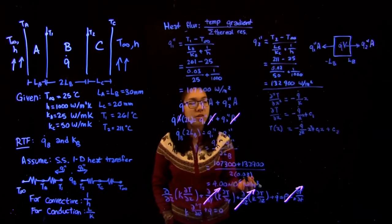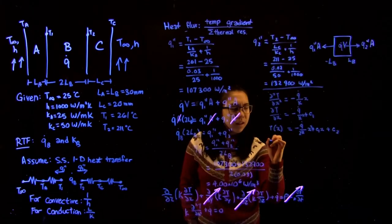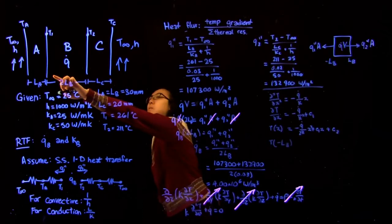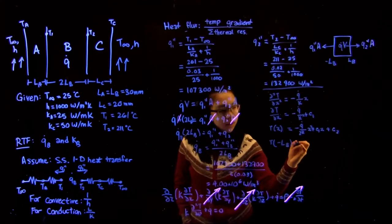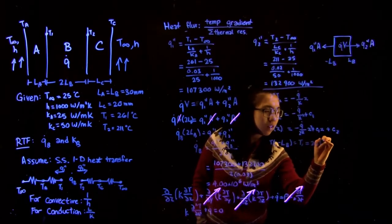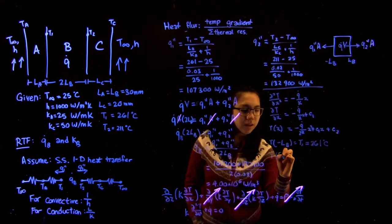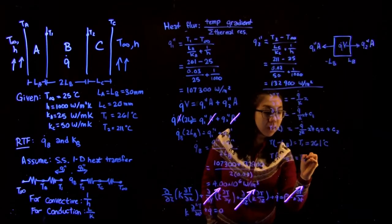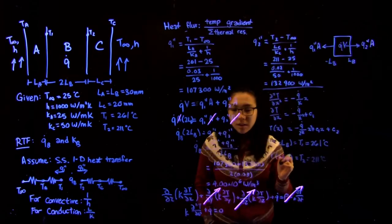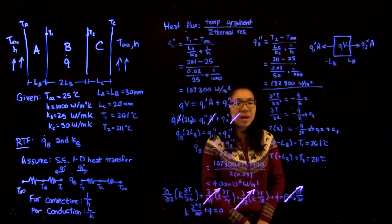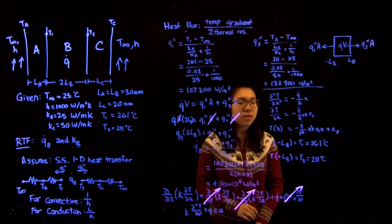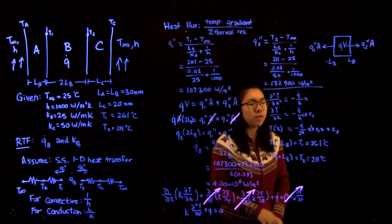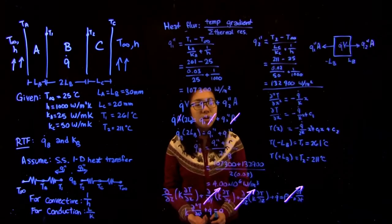Now we just want to substitute in our known boundary conditions. We know that at the left boundary this is going to be equal to t1 which is 261 degrees Celsius. We're also given that at the positive boundary the temperature of the wall is at t2 which is 211 degrees Celsius. You'll note that now we have the temperature profile which has three unknowns, but we actually only have two boundary conditions. The unknowns we have are k, c1, and c2, but we only have two known temperatures. So we essentially need one more relation in order to be able to solve this equation.